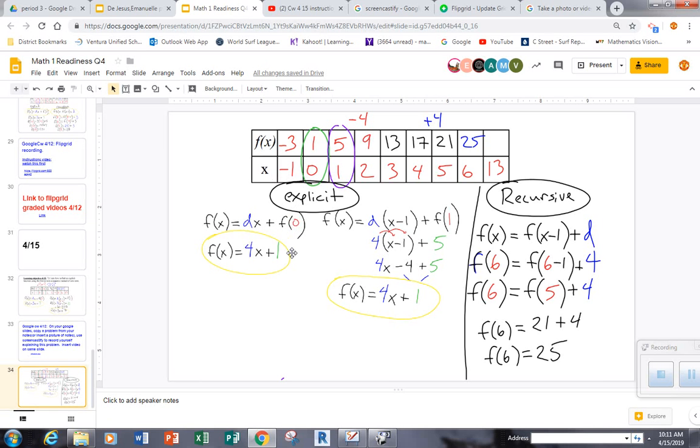The other one has you use not the zero term, but the first term in the sequence five with that same d. But you need to distribute that four through and combine like terms to get that same equation that the zero term would be. See that they are both the same.